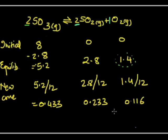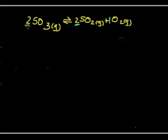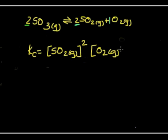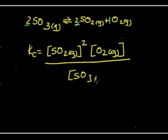So Kc equals products, which in this case is SO2 squared because we put a 2 there, and O2, divided by the reactants which is SO3 squared, again because I've got 2 moles of SO3.